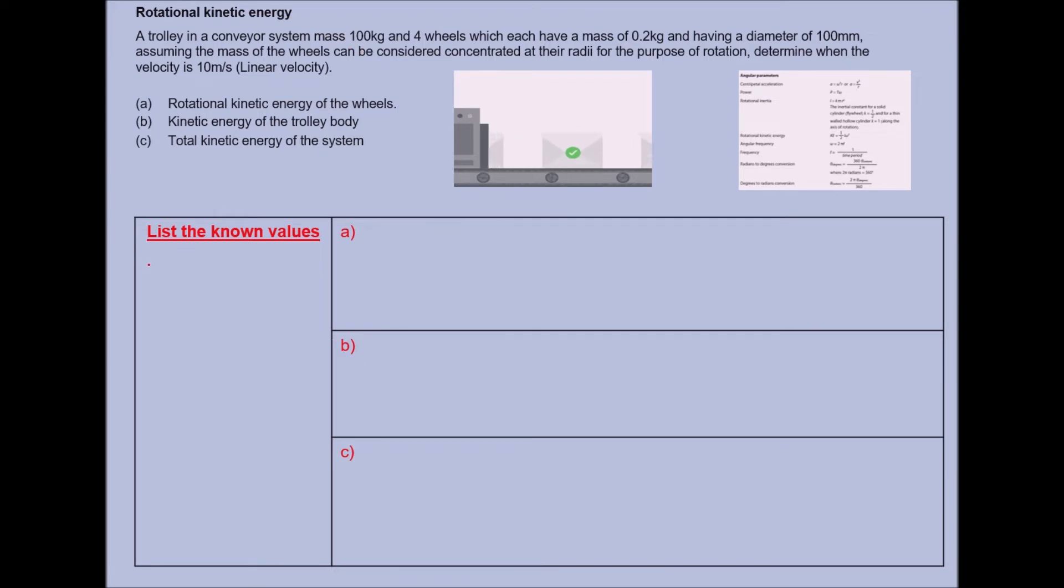I'm going to put a little T there to represent trolley, 100 kilograms. It's got four wheels and they each have a mass of 0.2 kilograms.